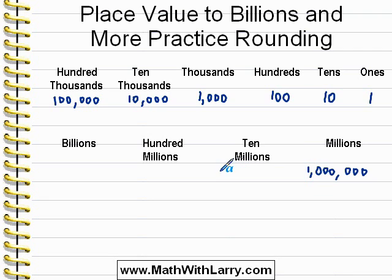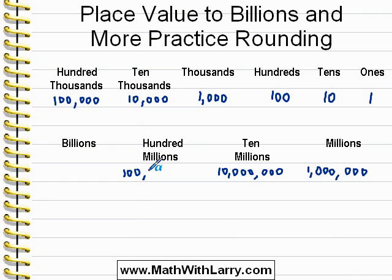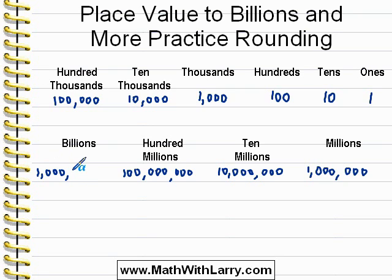Ten millions is an eight-digit number. Hundred millions is nine digits. And finally, billions is a ten-digit number, and then we're going to need an extra comma. That helps us to really see that it's billions.